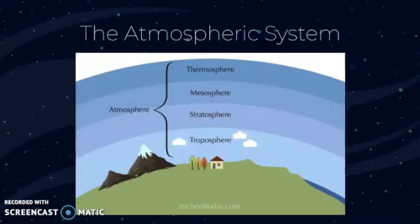What you have to know is that this is the atmospheric system, and these are the main layers that make up the atmosphere. There are actually some other ones, but you don't have to know them — these are the main ones. So you have firstly the troposphere, the stratosphere, the mesosphere, and then the thermosphere, and here are some characteristics of each.